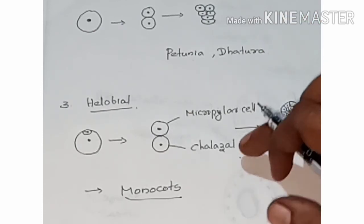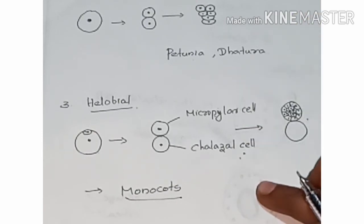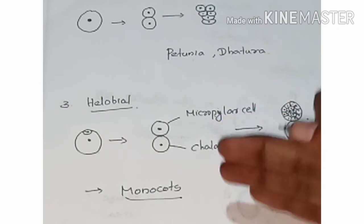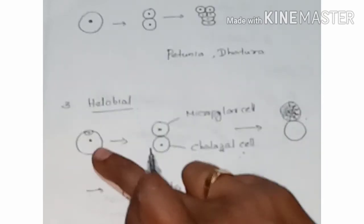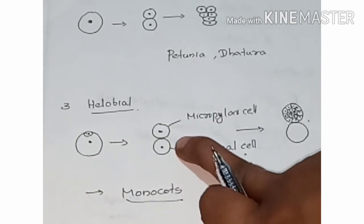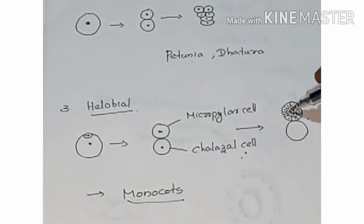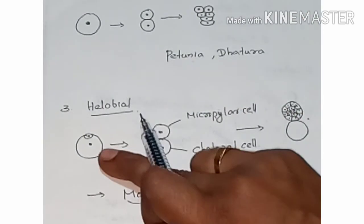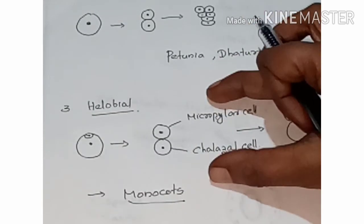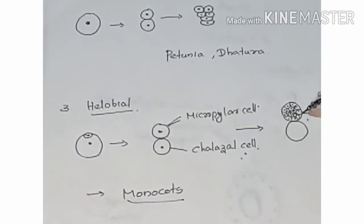In helobial endosperm development, the first division is accompanied by cytokinesis, but subsequent divisions are free nuclear divisions. The first division forms two unequal cells, and the subsequent divisions in each chamber are accompanied by cytokinesis.